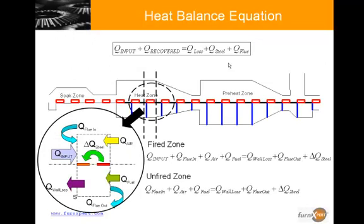The slide gives an overview of the heat balance equation. The overall heat balance equation is shown on the top. Where on the left hand side of the equation is the heat input and the recovered heat. And the right side of the equation consists of losses, the heat to the steel, and the heat that is lost through the flue.